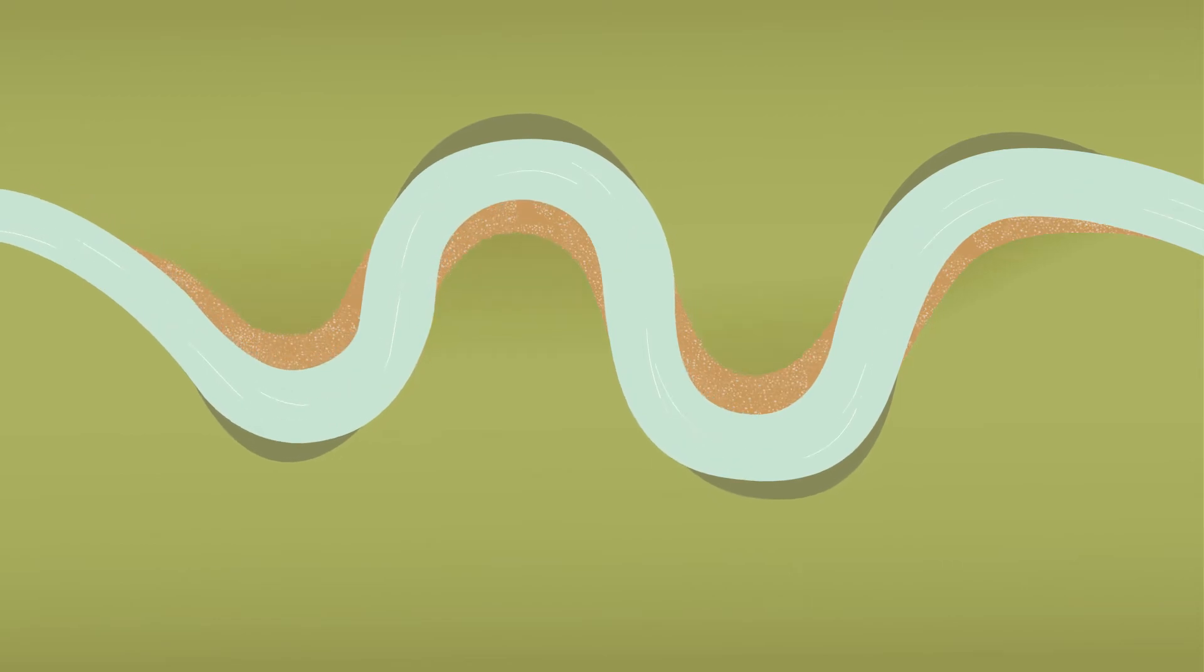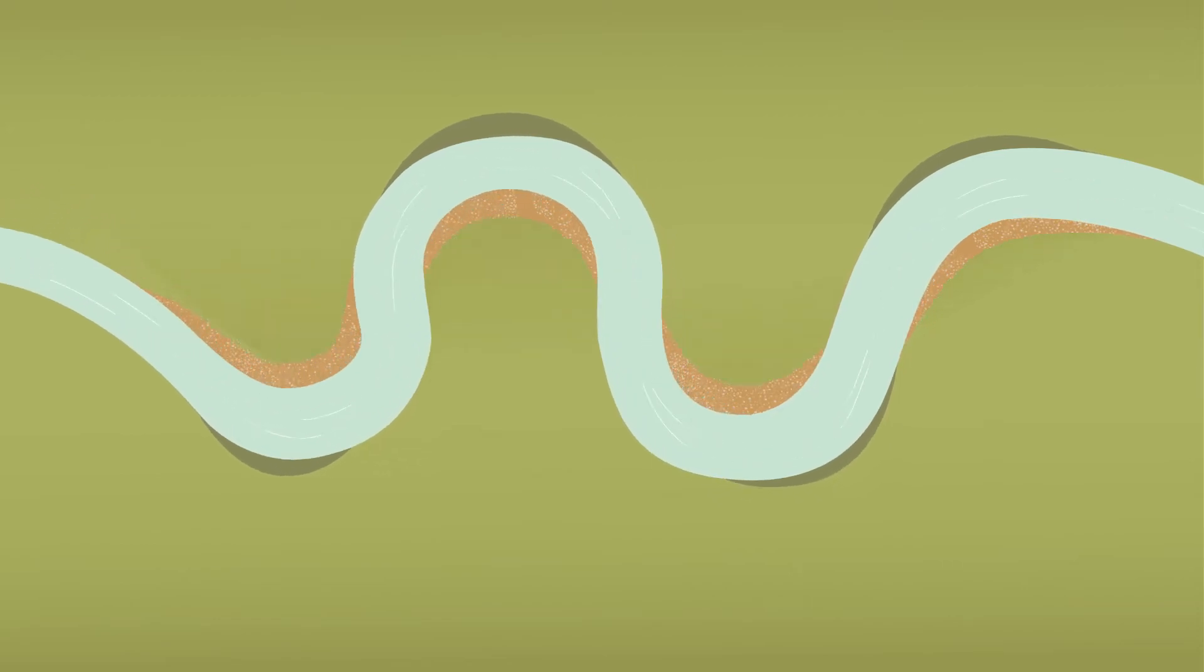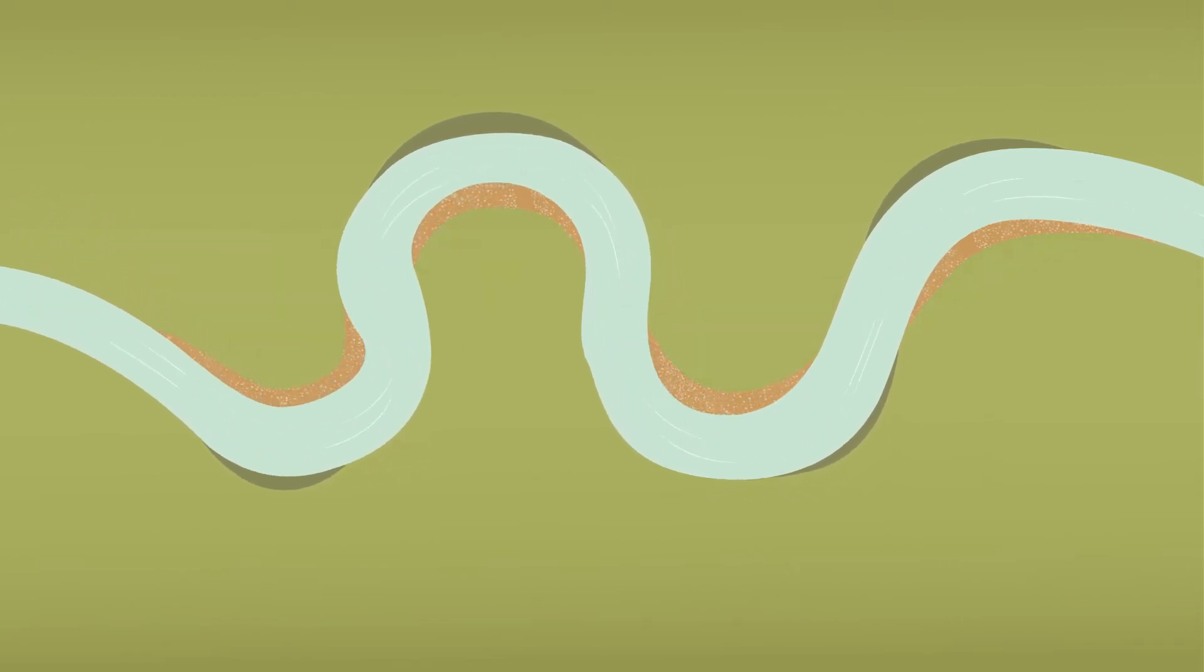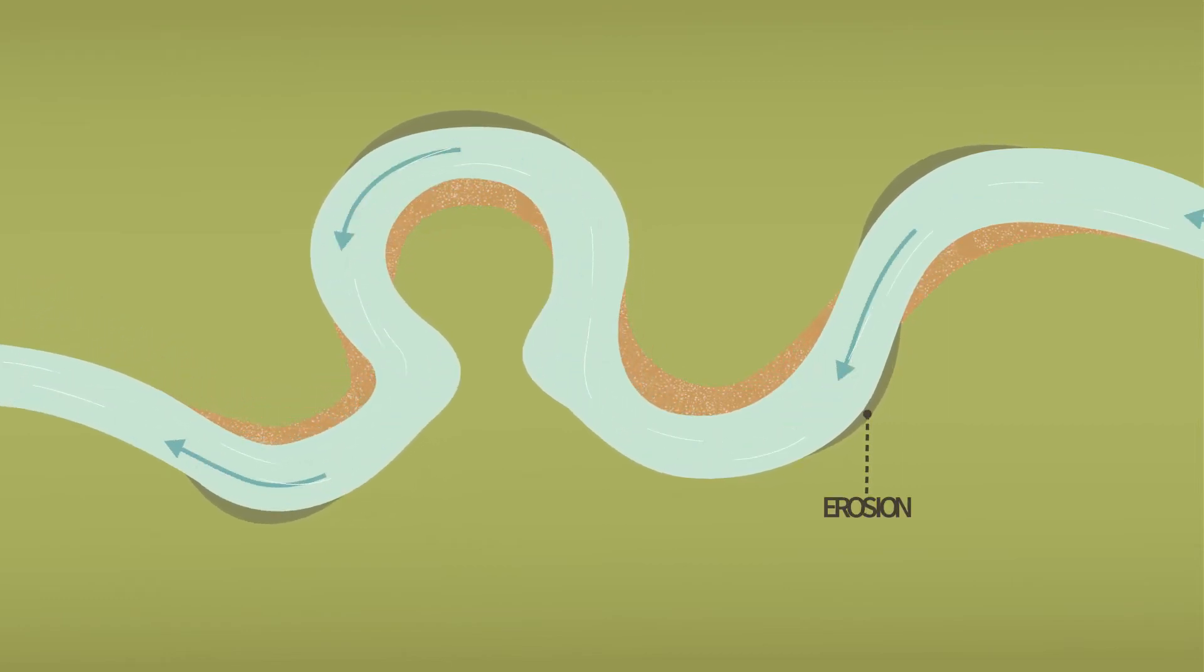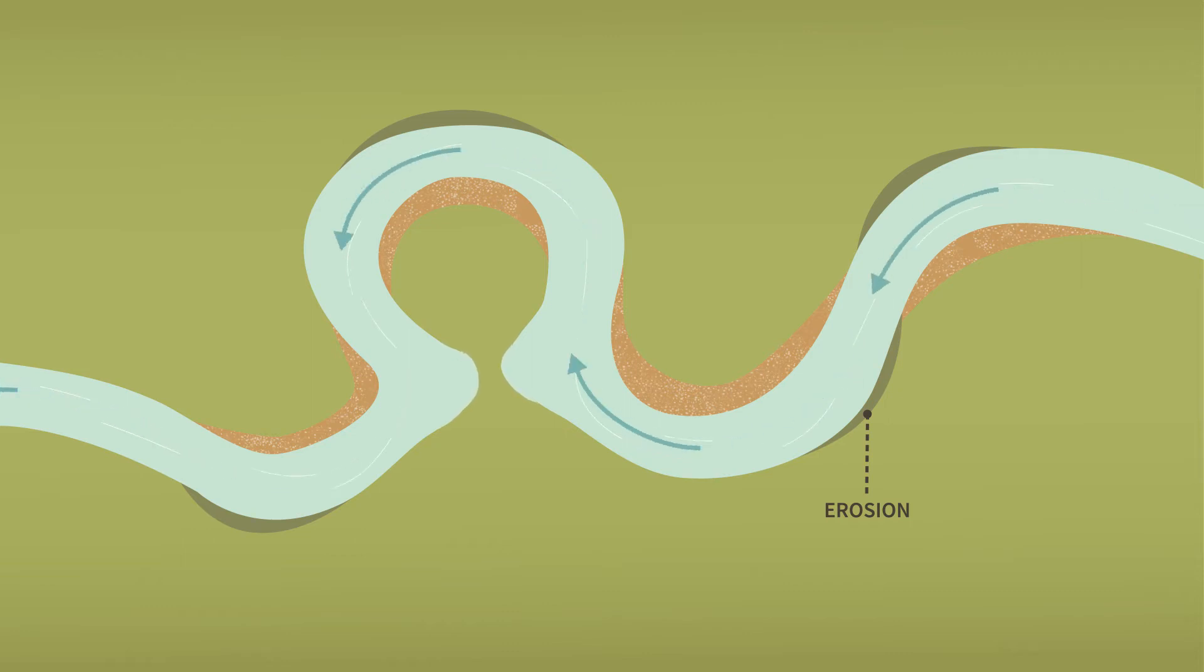As water flows around a bend, it will move faster on the outside of the bend and slower on the inside of the bend. The higher energy on the outside of the bend leads to erosion, whereas the lower energy on the inside of the bend leads to deposition and formation of point bars containing primarily sand.